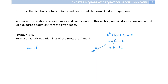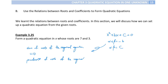First of all, the sum of roots of the required equation is equal to 10. And the product of roots of the quadratic equation is equal to 21. As I know the sum of roots is equal to the negative coefficient of x, so the required equation is equal to x squared minus (sum of roots) times x plus (product of roots).